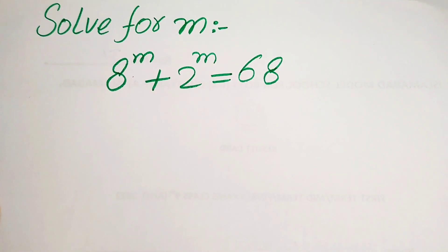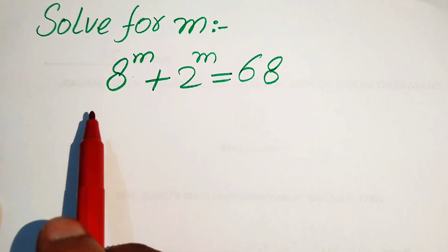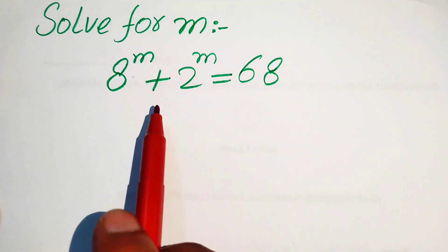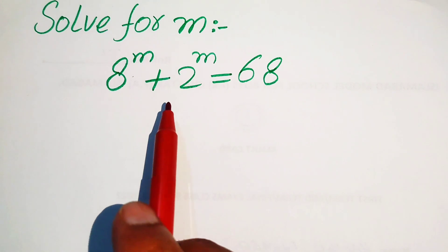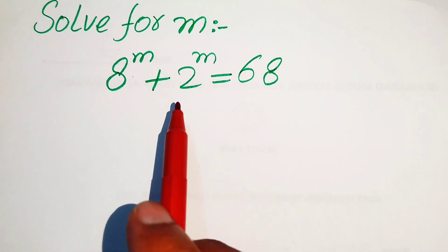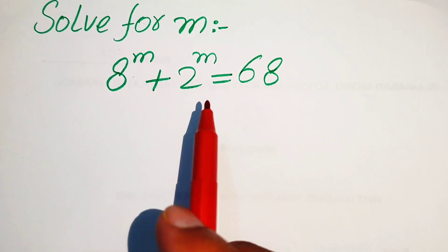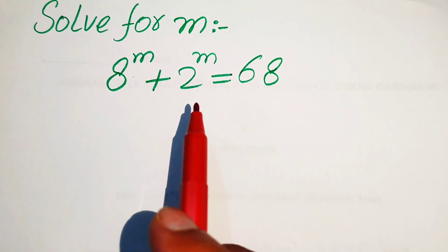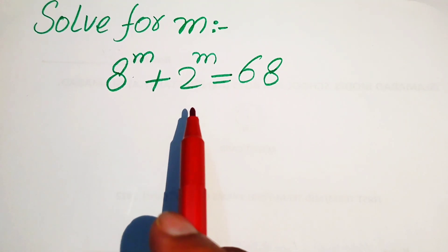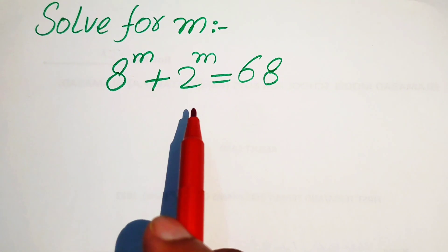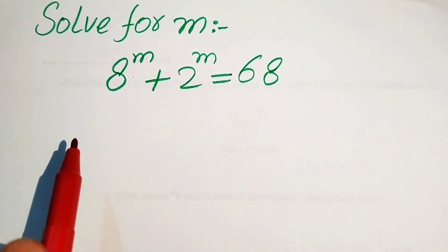Hello everyone, welcome. We solve this algebra problem where we have 8 to the power of m plus 2 to the power of m equals 68, and we solve this problem for the values of m.